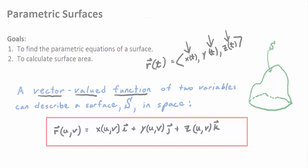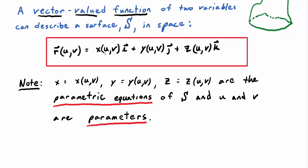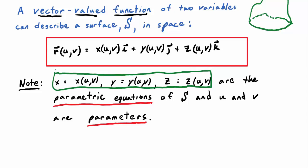The actual parametric equations of the surface are obtained by setting X equal to the I component of R(U,V), Y equal to the J component, and Z equal to the K component. So your parametric equations are X = X(U,V), Y = Y(U,V), Z = Z(U,V). U and V are called the parameters, just like T was the parameter for a curve.